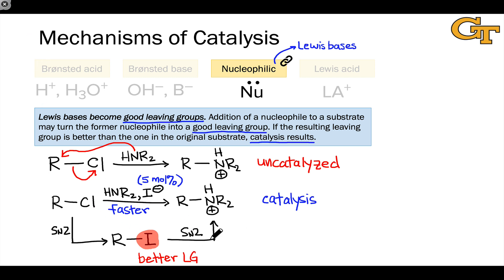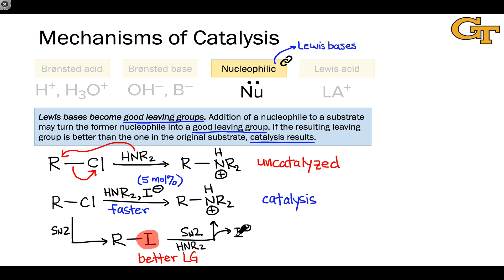This makes the next SN2 step with the amine faster. And notice that when the amine comes in to displace the iodide in an SN2 step, this regenerates the catalyst — kicks off I⁻ and generates the product, ammonium ion. So this is catalysis: the I⁻ that's kicked off in the second SN2 step can engage with another molecule of RCl and restart the cycle.